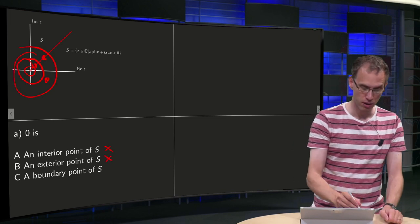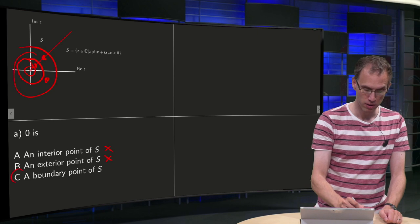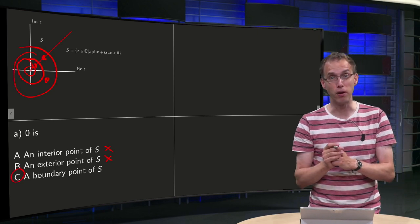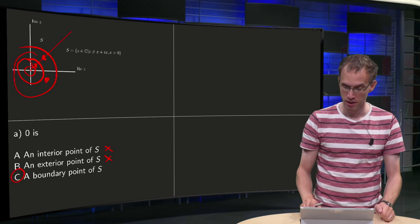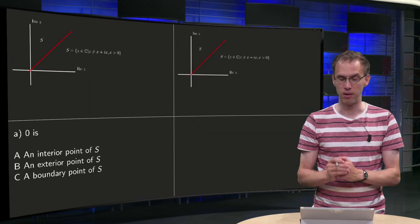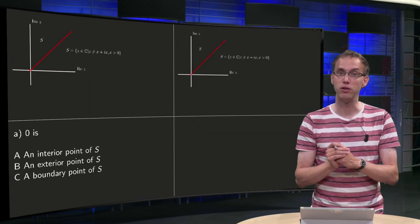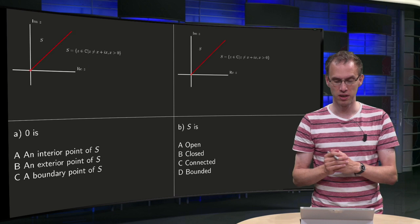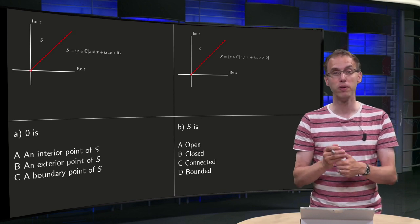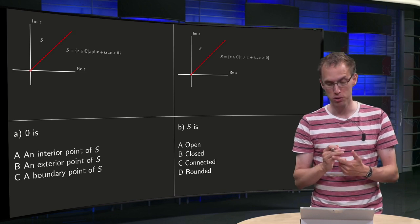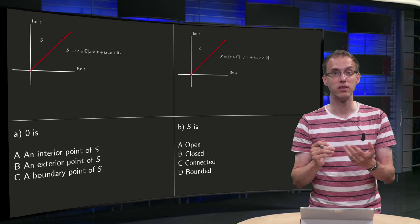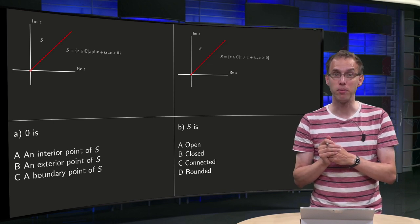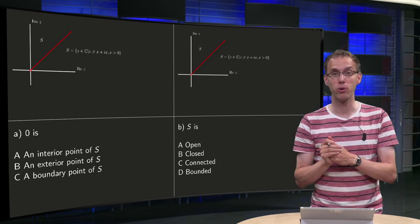So that leaves option c — by definition the origin is a boundary point of S. Now, new figure, because we have our next question: is S open, closed, connected, or bounded? In this case multiple answers can in principle be correct.